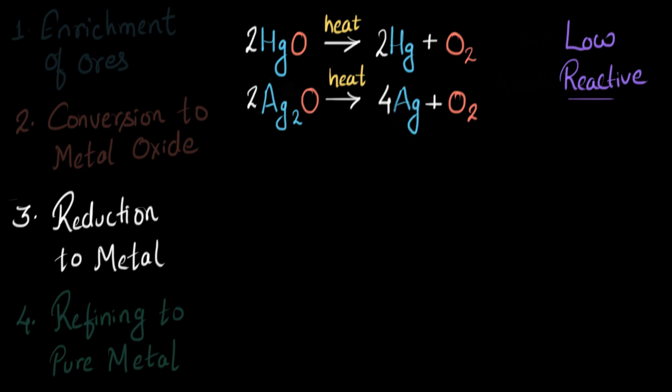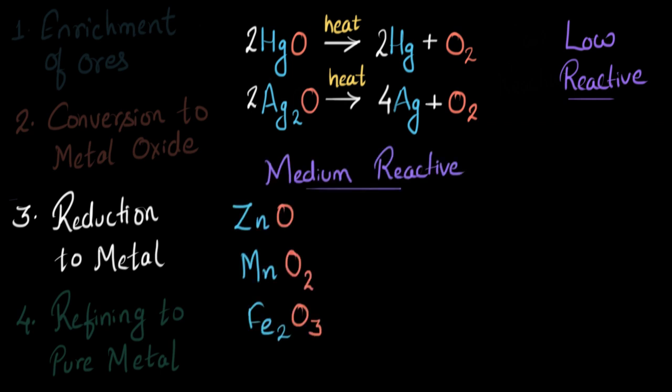Now let's talk about the oxides of medium-reactive metals, such as zinc, manganese and iron. All of these are somewhere in the middle of reactivity series. And that's why they are medium-reactive. Now we can't reduce them just by heating. We reduce them by displacement reaction. We react these metal oxides with a more reactive element. A more reactive element will displace a less reactive one from its compound.